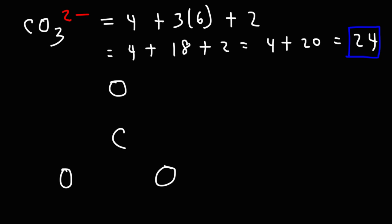Now carbon wants to have 8 electrons around it, and each bond represents 2 electrons. So in this example, carbon is going to have 4 bonds. If each oxygen gets 1 bond, in order for carbon to have 4, one of the oxygens has to be double bonded.